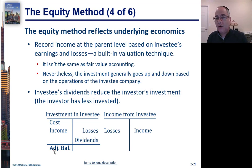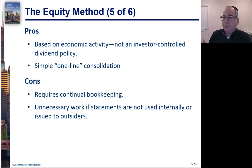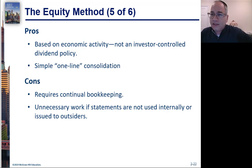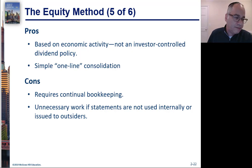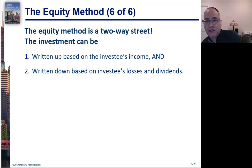Even though the value of the investment will go up and down based on different factors, the pros are that the value reflects some economic activity. It's reported as a single line on your balance sheet and a single line on your income statement, but it might not necessarily reflect fair value. An equity method investment can be impaired — if the value drops significantly, you may need to record an impairment and write down the investment.